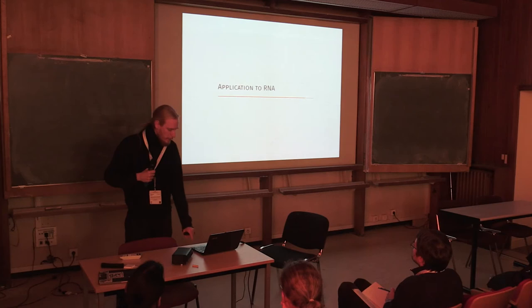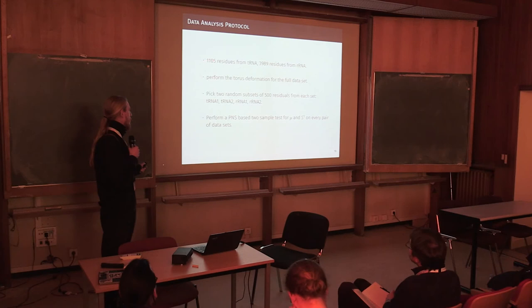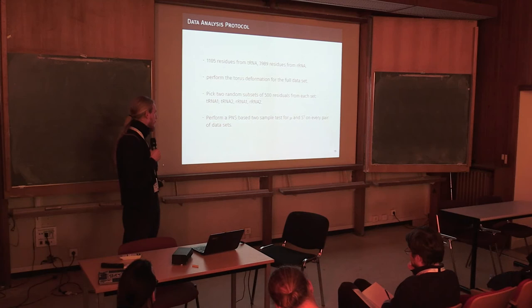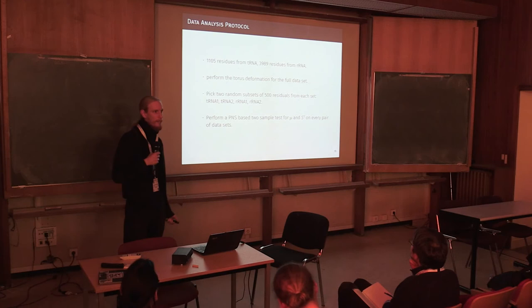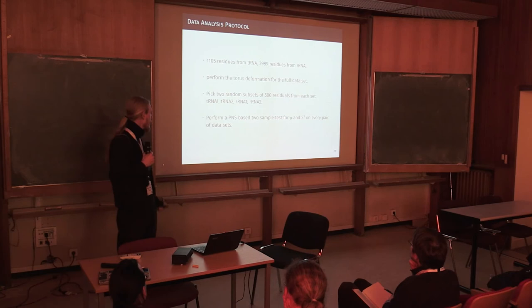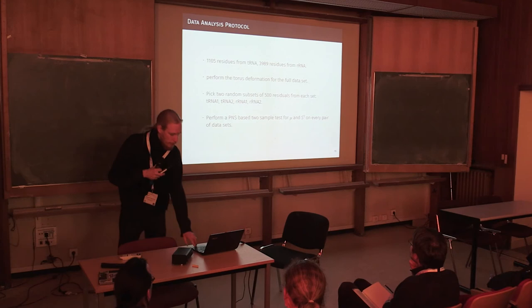Alright. Now the application to RNA, very briefly. We take 1100 residues from tRNA and roughly 4000 residues from ribosomal RNA. We perform the torus deformation on the full joint dataset. And then we pick two random subsets of 500 residues from each of the cells. This is just a proof-of-concept idea to see—these two, of course, should not reject the null hypothesis of equality. Whereas if we do these cross comparisons, we might actually reject the null hypothesis. And we perform PNS based on the true sample test only for the nested mean and the S1 on each of these pairs, because these are maybe the most illustrative.